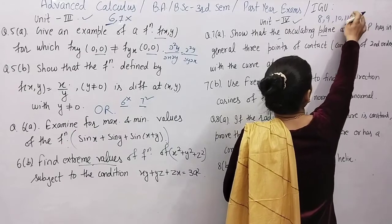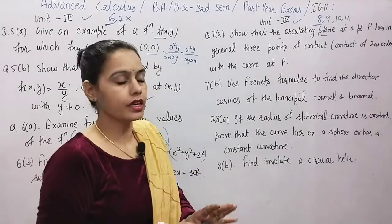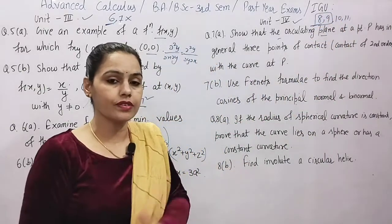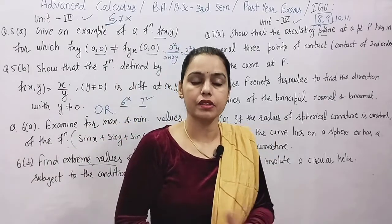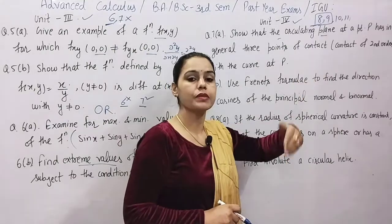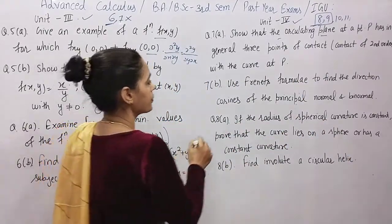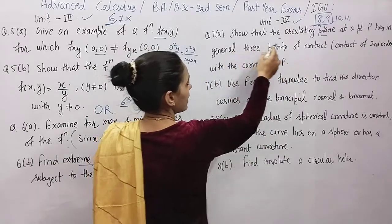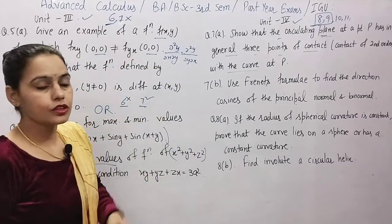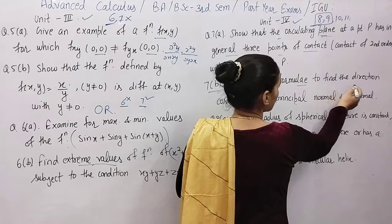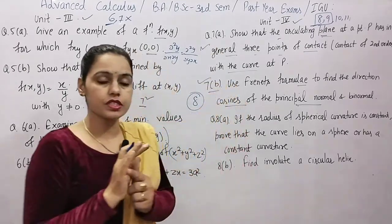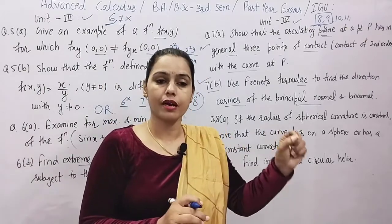Unit four is differential geometry — chapters 8, 9, 10, and 11. If you have done curves in space, you won't have trouble with chapter nine. Show that the osculating plane at point P has general three-point contact of second order with the curve at P. Use the coordinate formulae to find the direction cosines of the principal normal and binormal — these are the most important topics. Chapter 8 covers both questions; differential geometry has 4 chapters and if you have done curves in space, your questions will be ready.